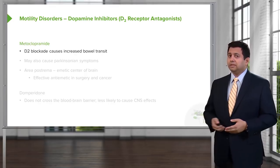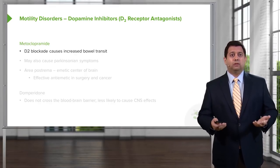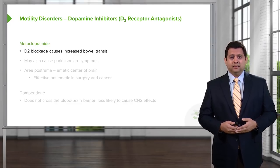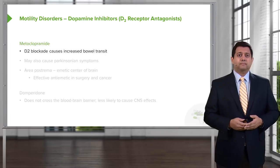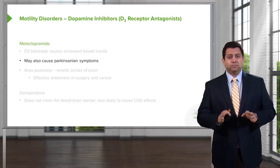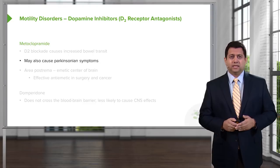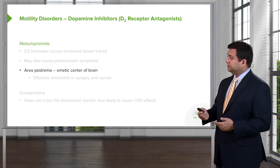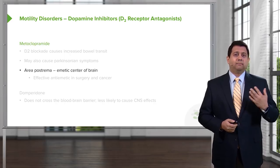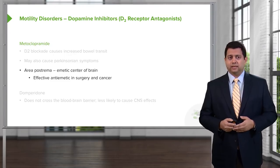Other agents include the dopamine receptor antagonists, specifically the D2 receptors. Metoclopramide is your prototypical example. It causes D2 blockade, which causes increased bowel transit, so things move a little bit quicker. They may also cause Parkinsonian symptoms, so you have to be fairly careful. They also work in the area postrema, which is part of the emetic center of the brain, making them very effective anti-emetics in surgery and cancer patients.